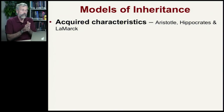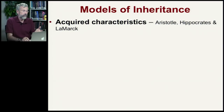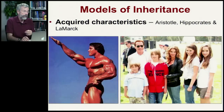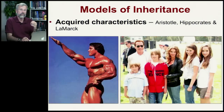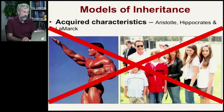In the past, there were various different models of inheritance. There was the notion of acquired characteristics, most clearly explicated by Lamarck, but also held by Aristotle and Hippocrates — that through use and disuse, traits can be modified and passed on. But we know that's not right.